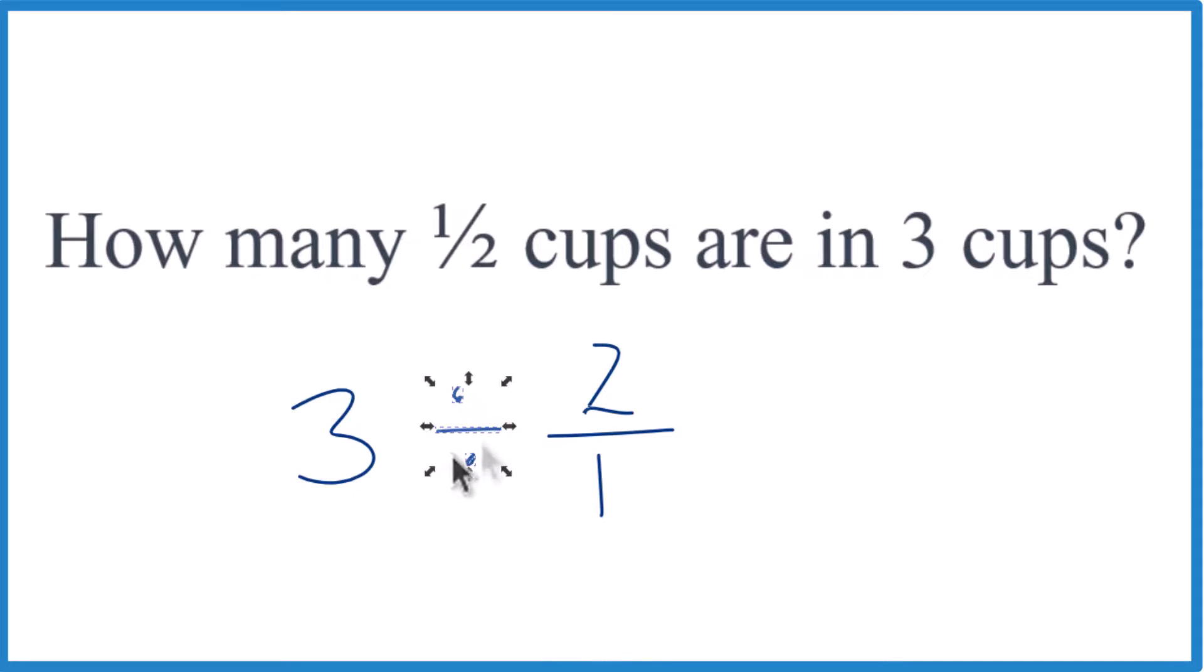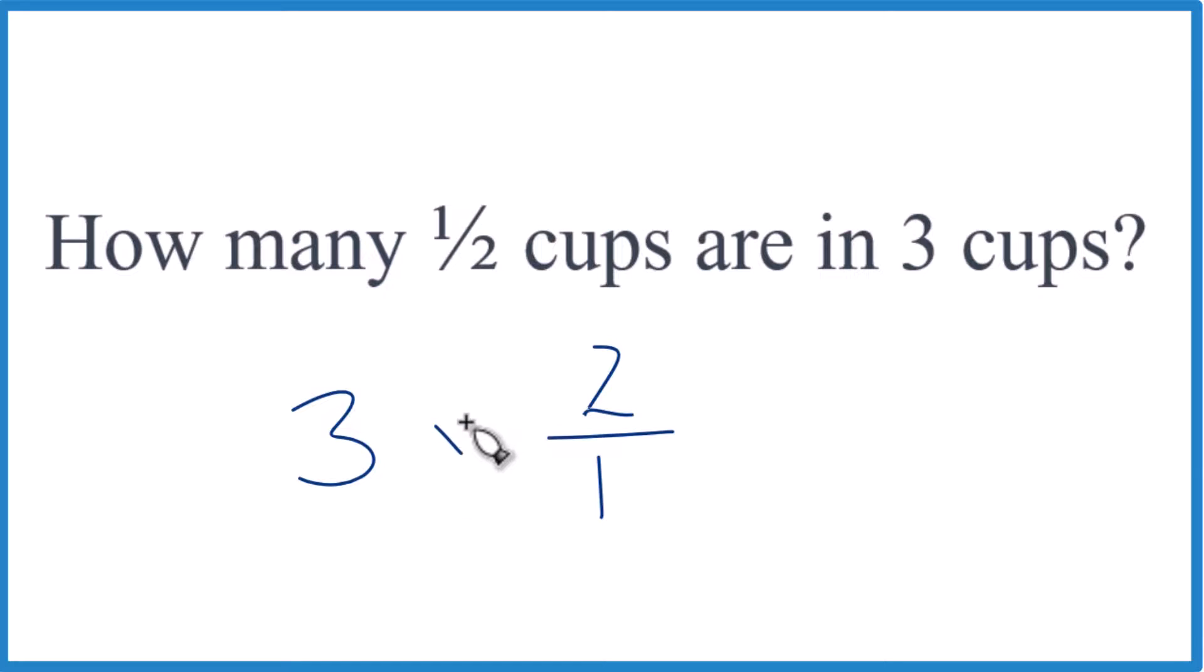And then instead of division, we multiply. So three times two over one, two divided by one is just two. Three times two equals six, and that's what we got before.